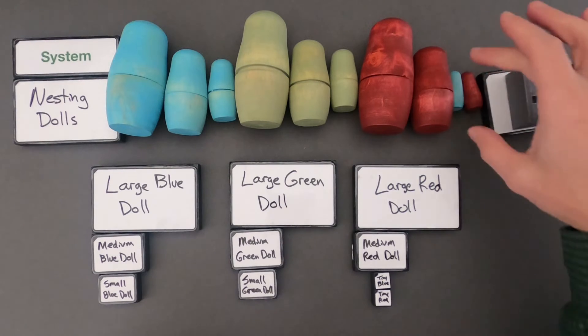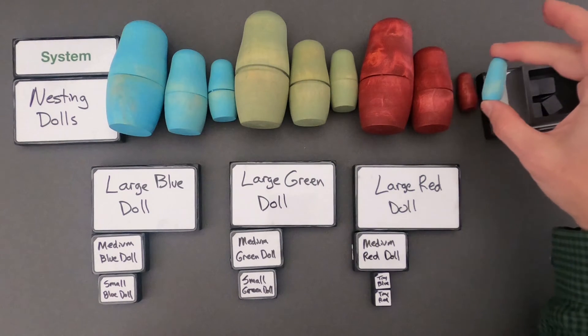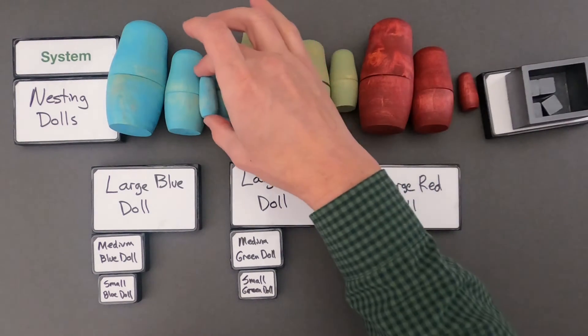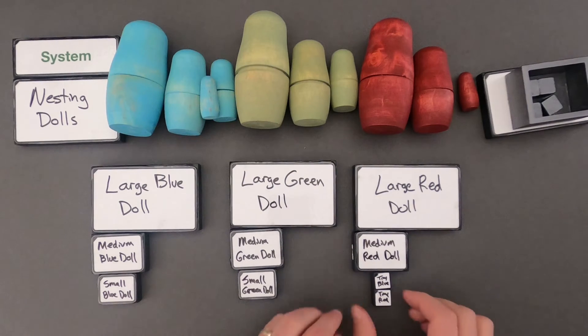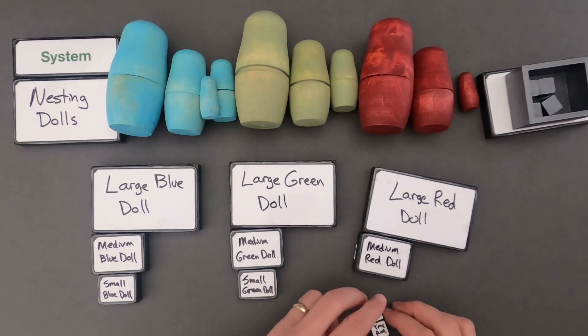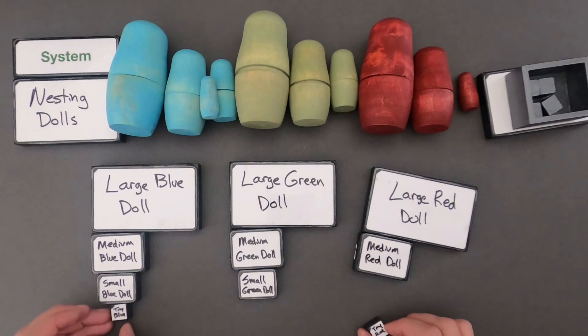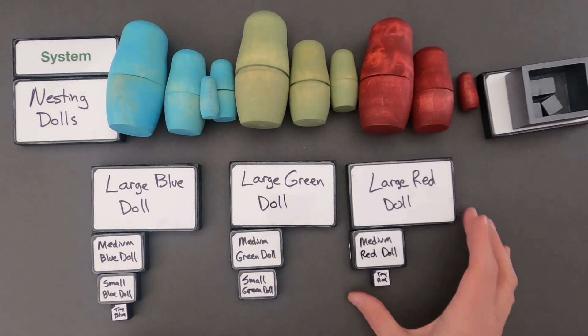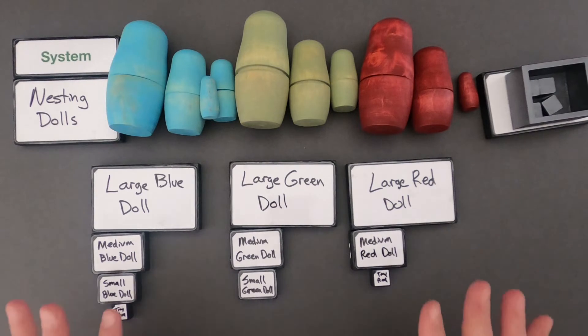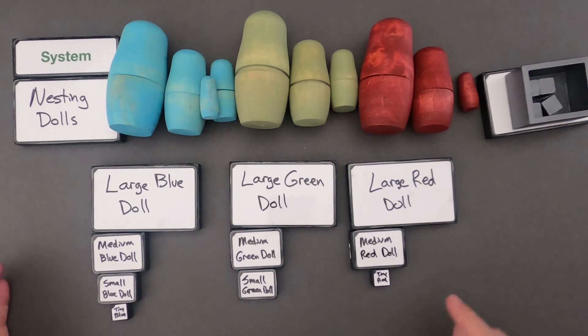Now what's interesting to me is this blue one seems like it's out of order. It seems like this one should be over here. So if I wanted to show that I would simply move the tiny blue doll over here to show a better hierarchy of systems. And so the nice thing about defining this as a hierarchy of systems is I can start looking at interactions between those.